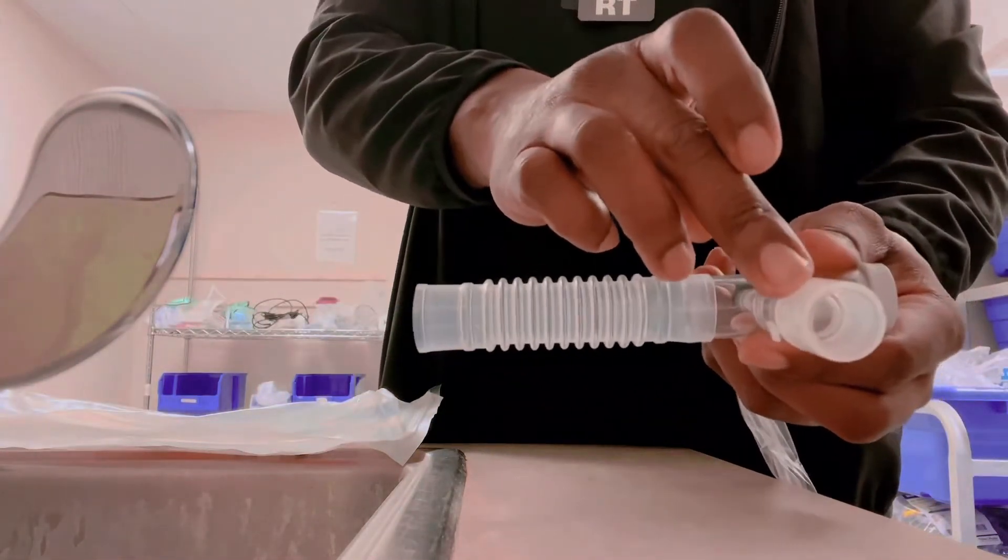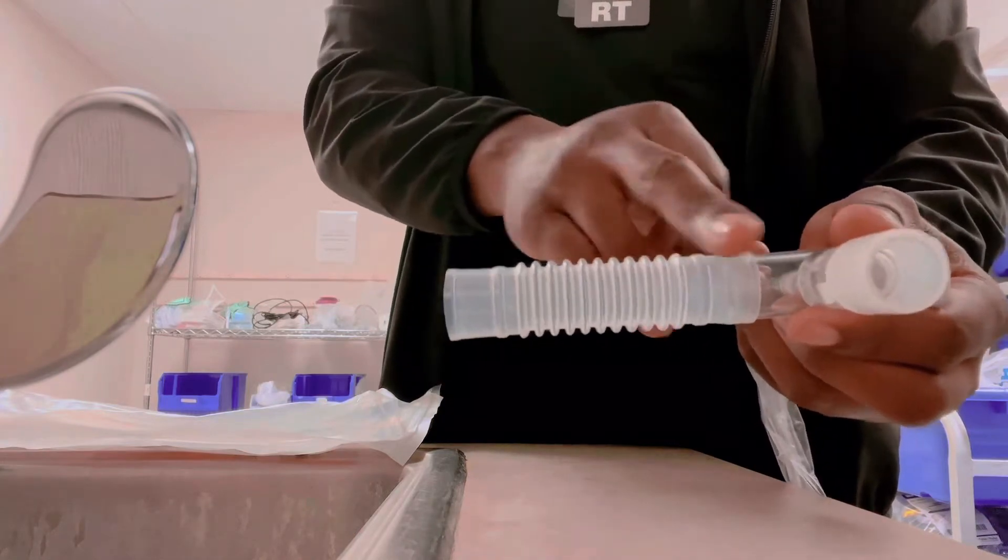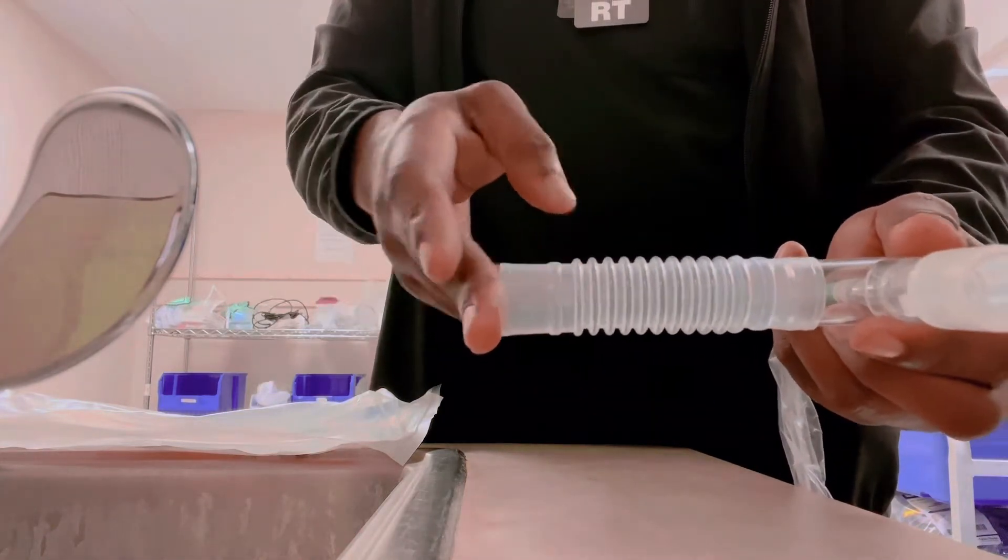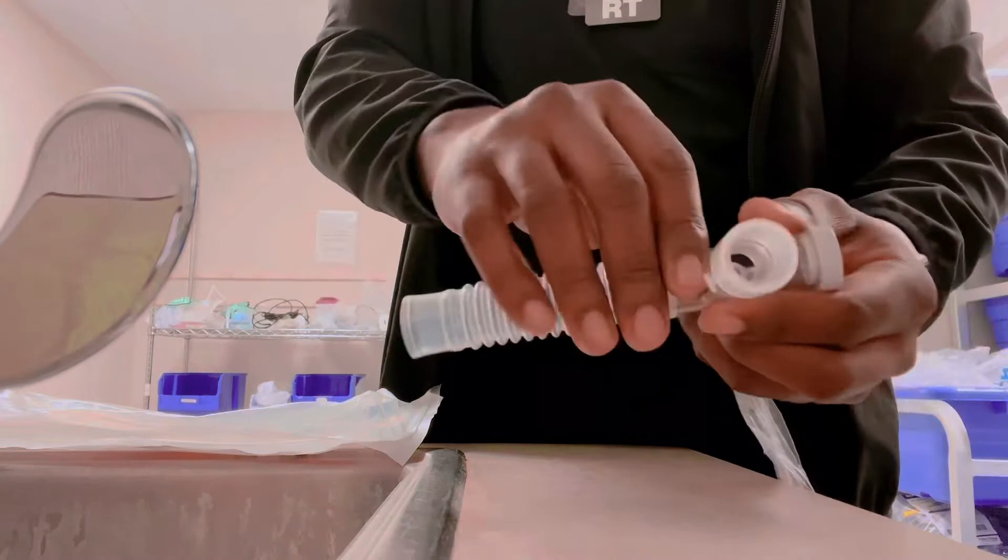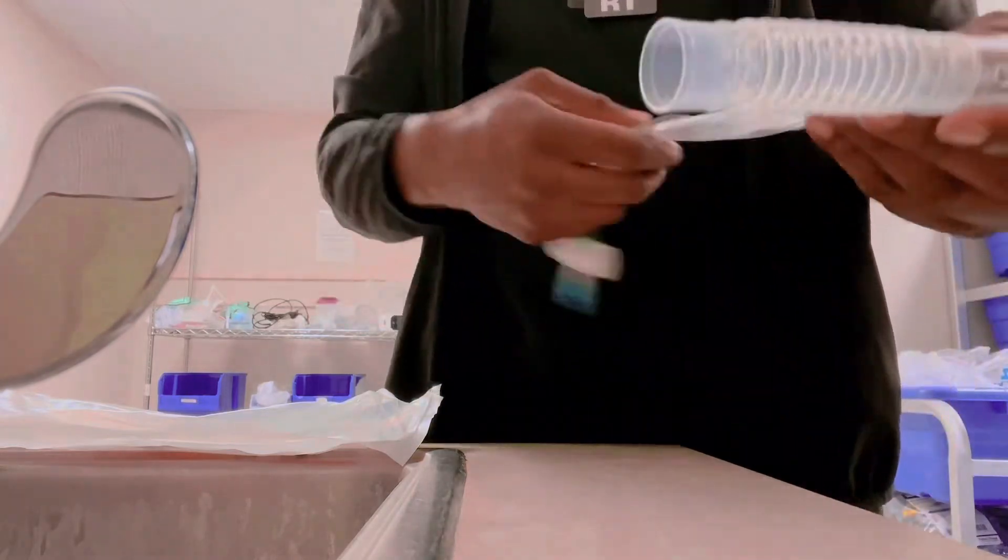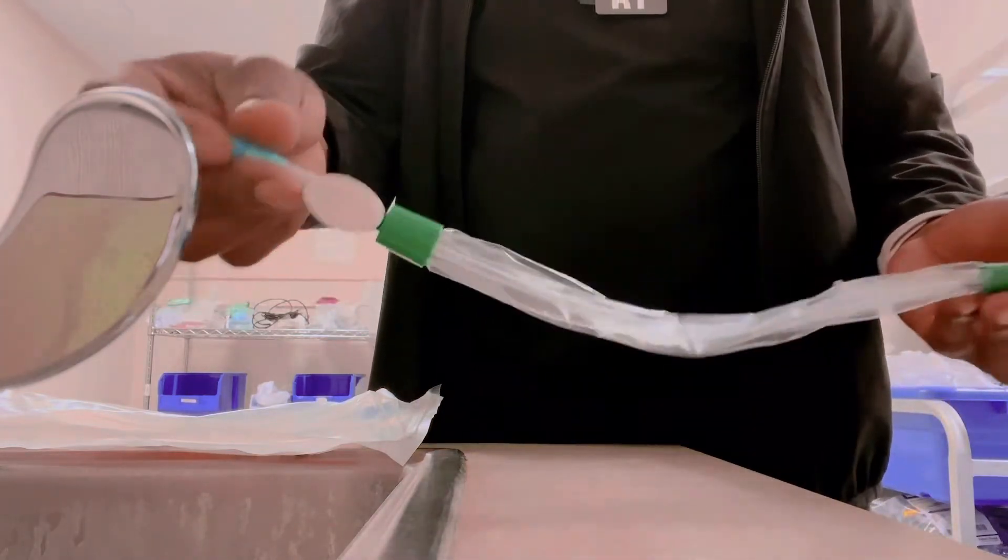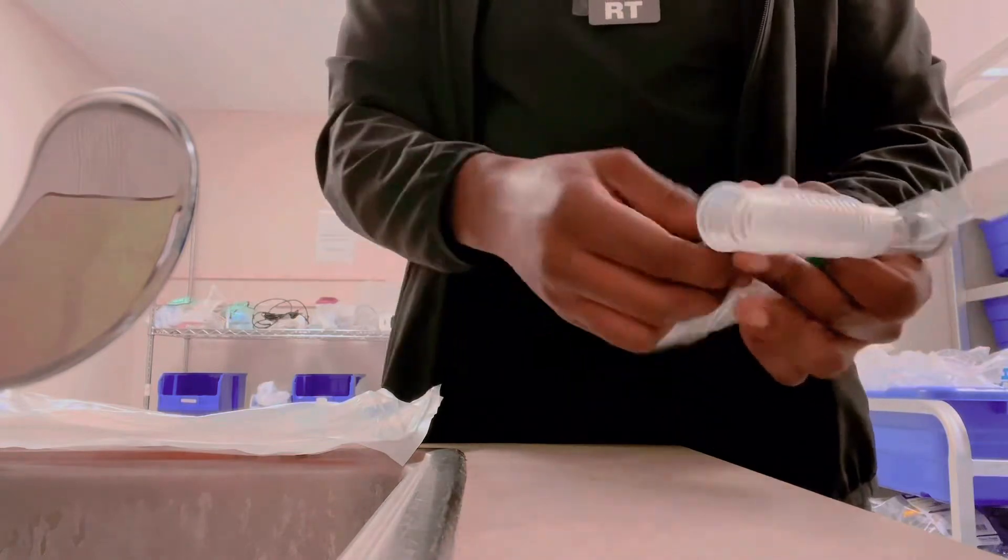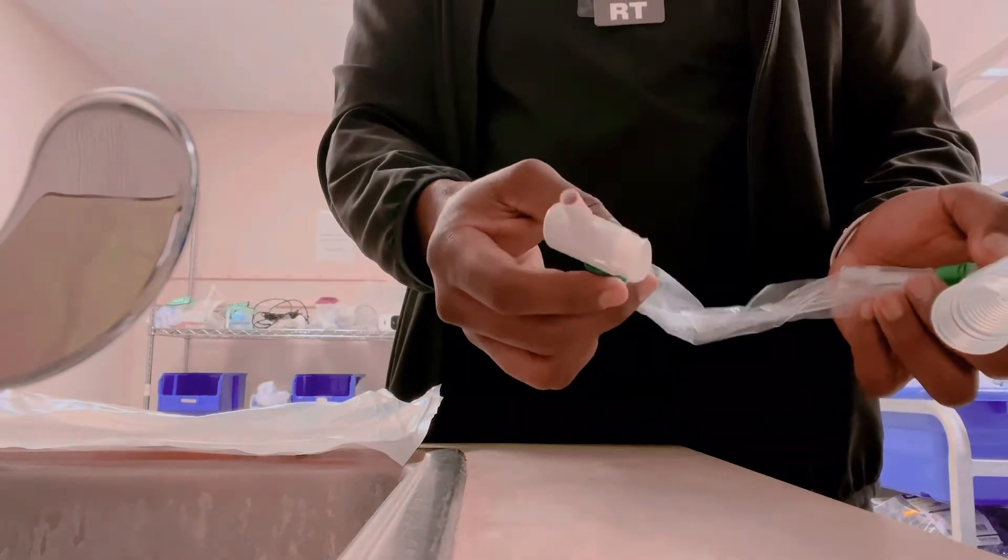This end goes to the tracheostomy tube directly to the patient. This goes to the corrugated tubing, the wide bore tubing to the patient. This goes to our vacuum suction. This piece wouldn't normally be here, but this would be connected to our vacuum suctioning.